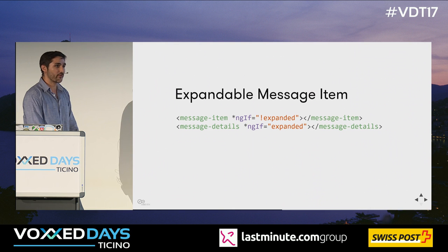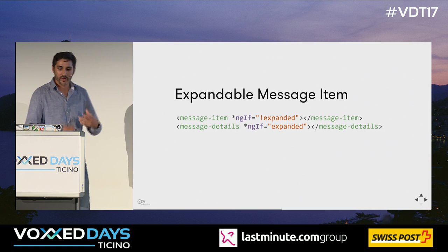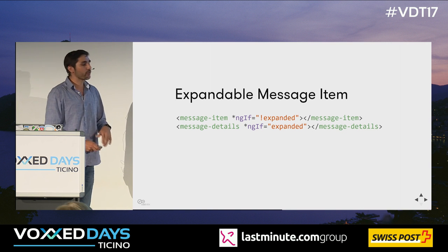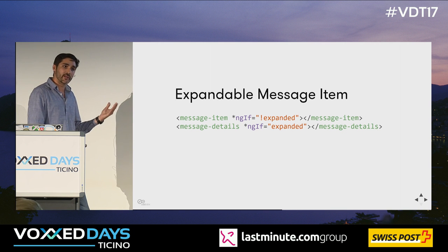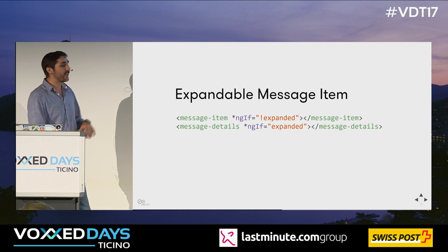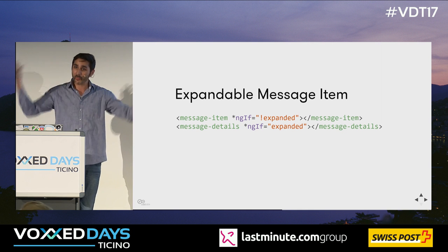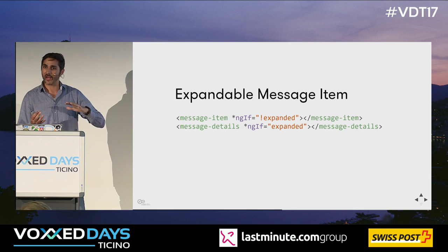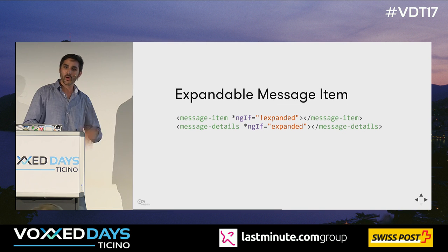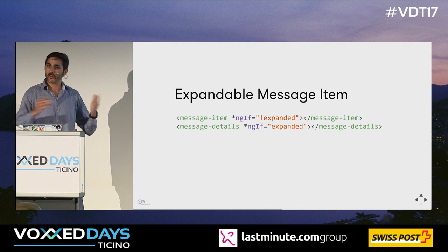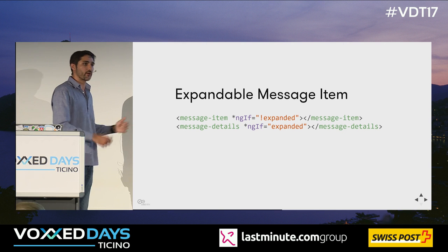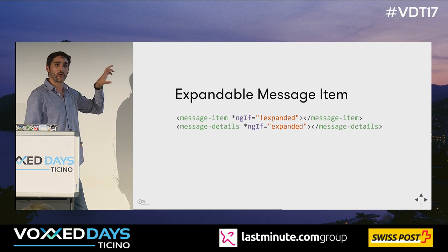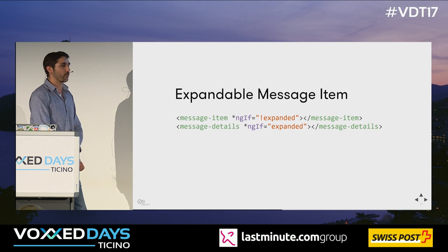Instead, simply use composition. Rather than making our message item expandable with details, we create a separate component for the message item, a separate one for the message details, and wrap both into a wrapper component called expandable message item. There we just decide whether to display the message item or the message details based on the expanded state. It's really simple if you think about it, but we need to think more in these terms of compositional solutions when we build our application.